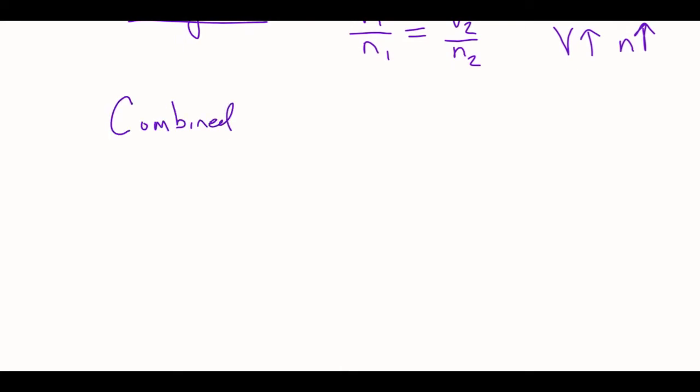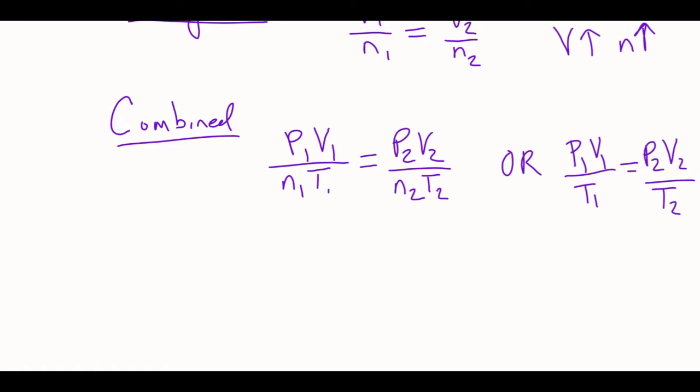So this one is the combined gas law. Basically, they just took all of those ones above it and put it all together. So I get P1V1 over N1T1 is equal to P2V2 over N2T2. This could also be written without the moles. So basically, same thing, just no N on the bottom. So what's really key about this one is that it has all the different things in it. So these kinds of questions, you're going to use this equation when you have two of each of the variables. So you're going to have two pressures, two volumes, two temperatures, a bunch of different things in the question.